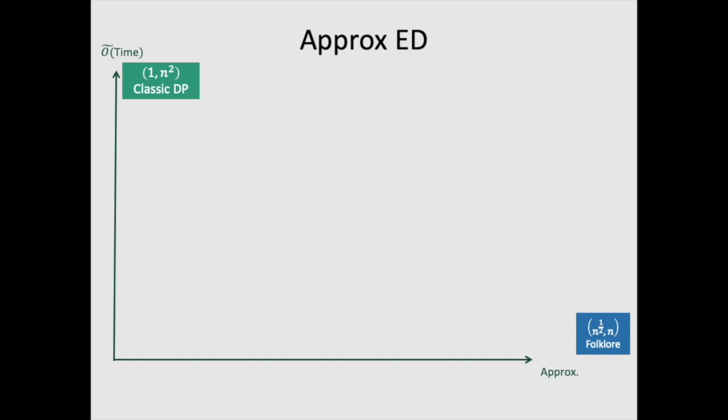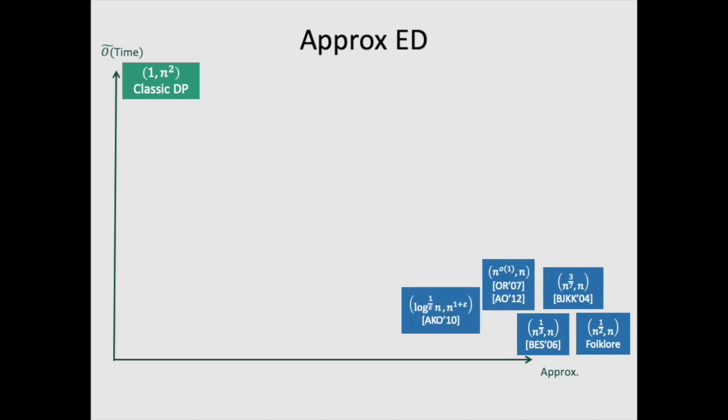There's a folklore algorithm which runs in linear time and gives a square root of n approximation, and this was progressively improved to giving an n to the 3/7 approximation in linear time, n to the 1/3 approximation, n to the little o of 1, and also polylog of n in n to the 1 plus epsilon time.